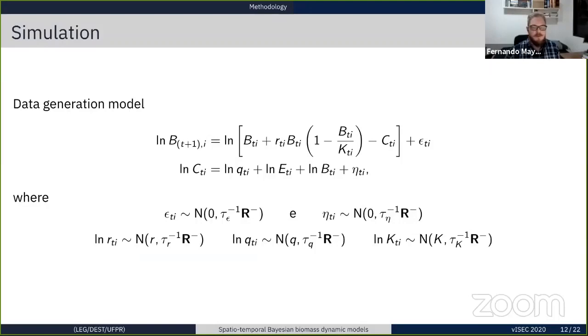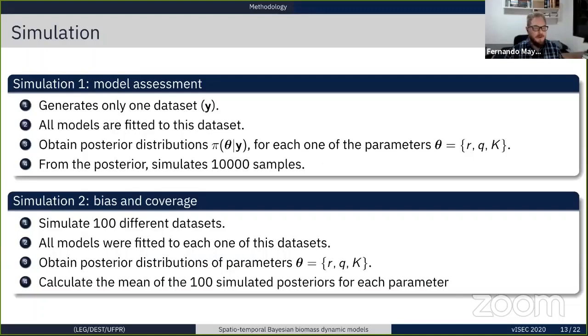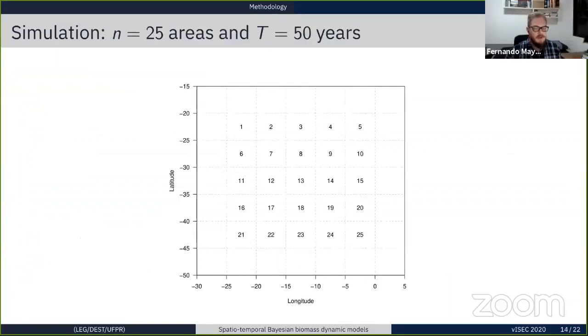To simulate from this model, we used this generic biomass dynamic model, and assuming that all the parameters were random variables structured in space and time to allow for the space-time dependency. Two simulation scenarios were developed, where the first simulation was primarily for model assessment, where we generated only one dataset, fitted all models to this dataset, and obtained the posterior distributions for each of the parameters, and from this posterior we simulated 10,000 samples. The second simulation was just to check bias and coverage, and we will not have time to show them here. We simulated data for 25 years in a regular lattice, and for considering 50 areas.